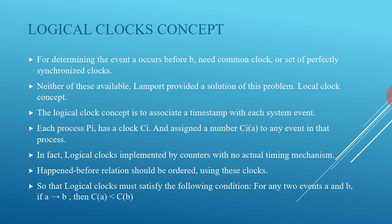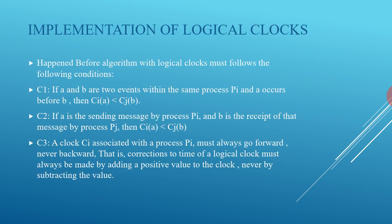The happened-before relation should be ordered using these clocks, so logical clocks must satisfy the following condition: for any two events A and B, if A happened before B, then C(A) is less than C(B). If A is the sending of a message by process Pi and B is the receipt of that message, this condition must hold.